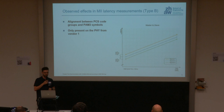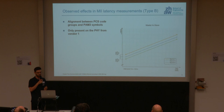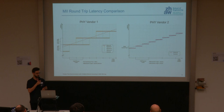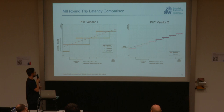A second MII effect, also Type B, relates to the alignment between PCS code groups and PAM3 symbols. Recalling that 400 nanoseconds divided by three gives 133 nanoseconds, there are three possible alignments. We observed that one vendor's PHY presented three possible latency values for the same cable length each time the link was reestablished. Vendor 2 shows a staircase with 133-nanosecond jumps; Vendor 1 shows 400-nanosecond jumps with the three-alignment effect superimposed — resulting in three overlapping staircases.